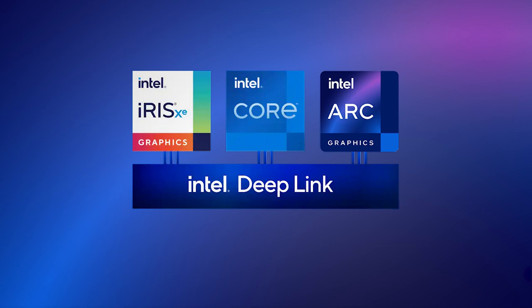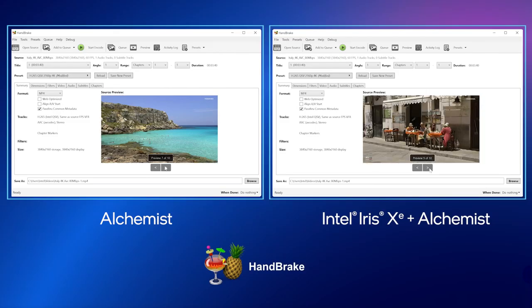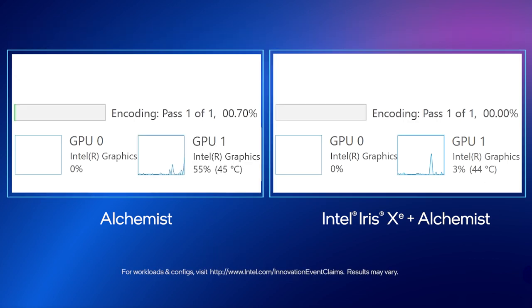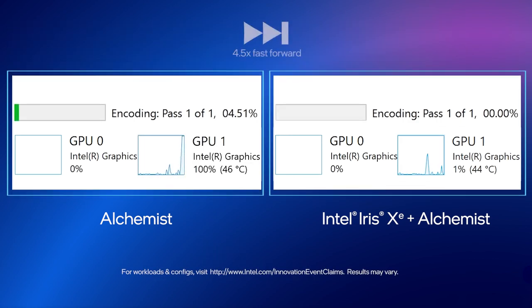In this video, I'm showing DeepLink in action. This is Handbrake, a popular video transcoding application. Alchemist is on the left, and Alchemist with DeepLink is on the right. We're showing the Windows Performance Monitor for both systems.